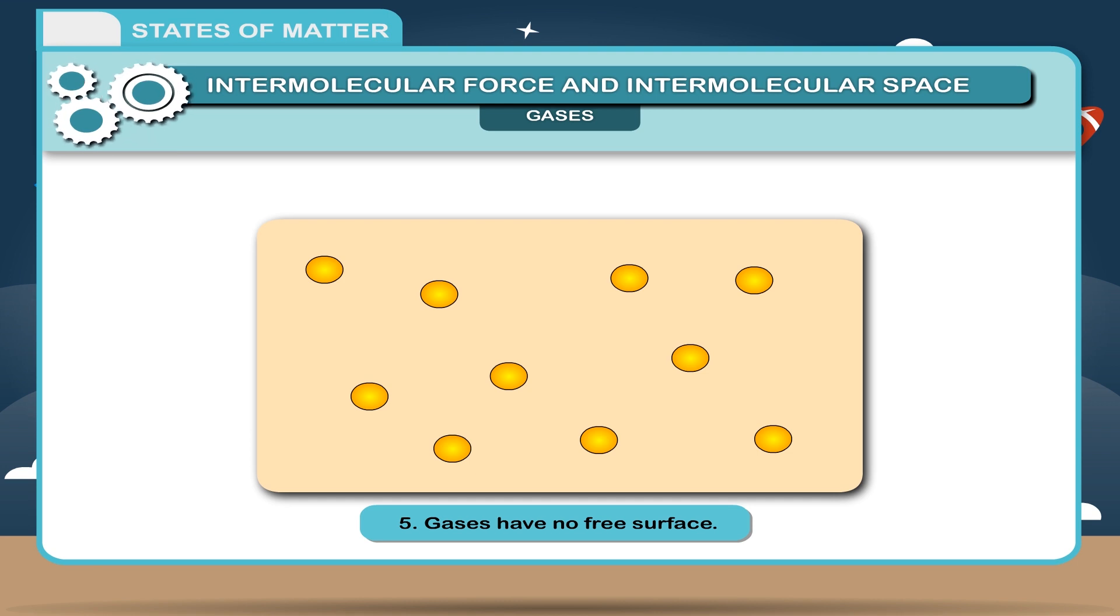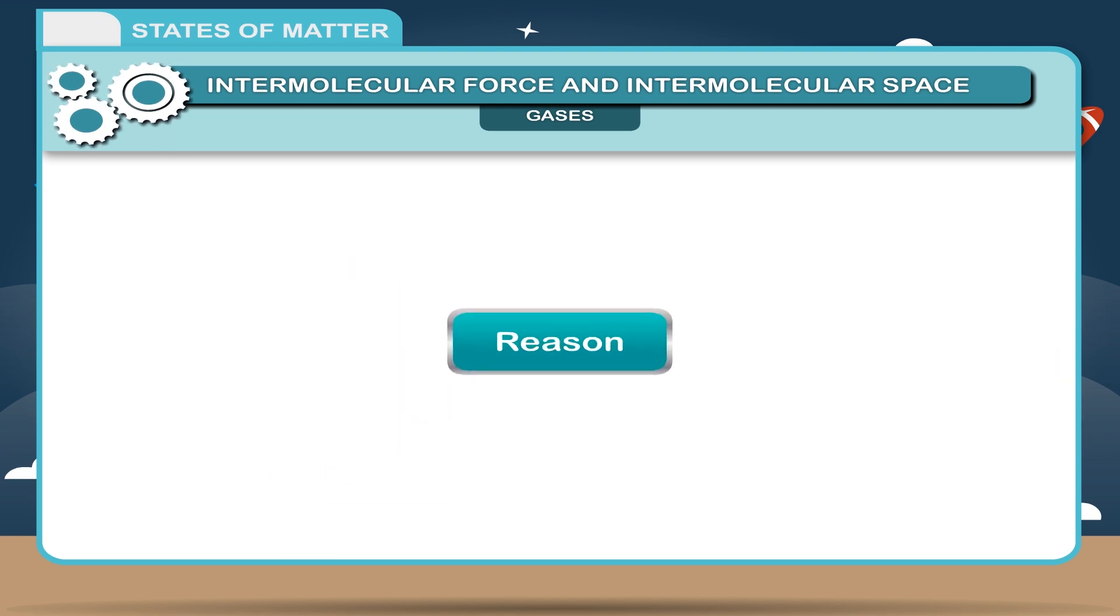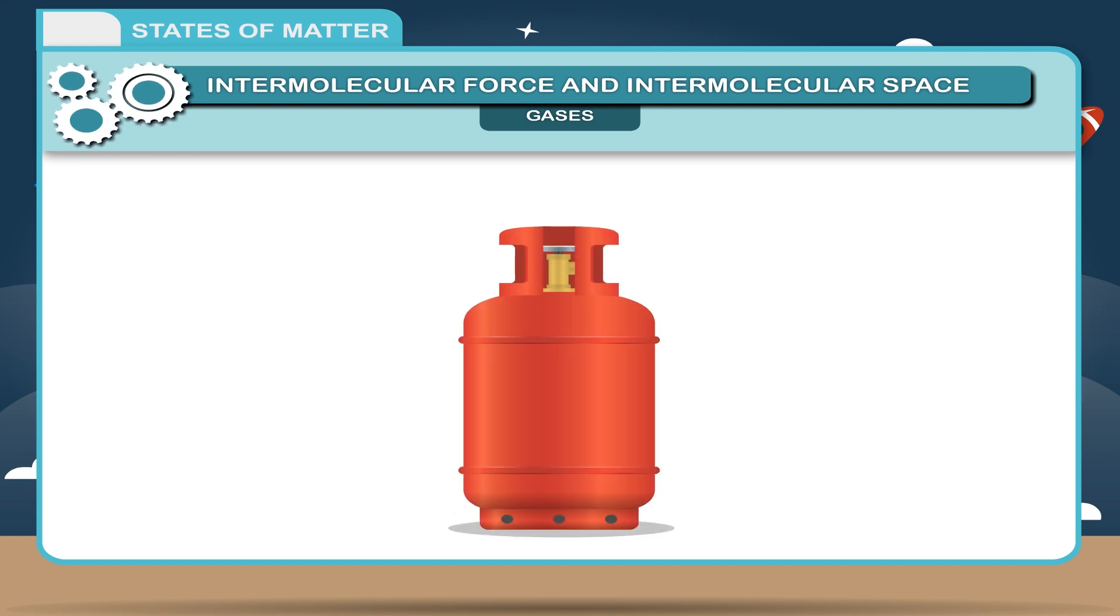Gases have no free surface. Reason: If you keep gas in a container, then to avoid escaping of gas, you must seal the container. Example: LPG cylinder at home is sealed as it contains cooking gas. Hence, gases have no free surface.